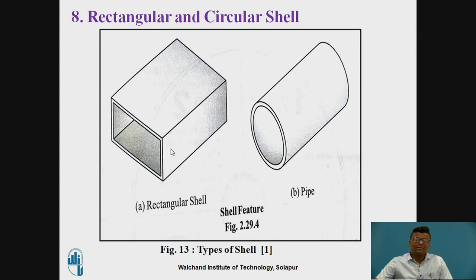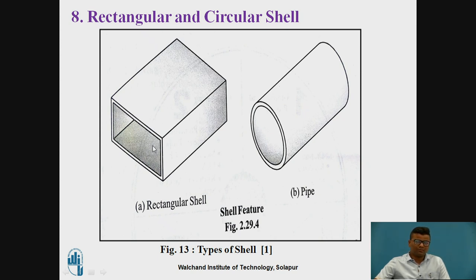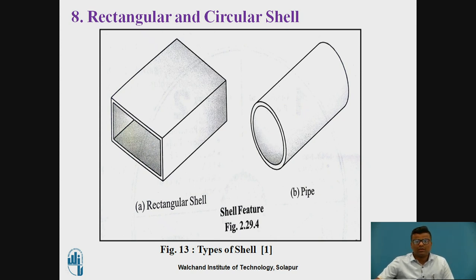Shell. Shell is similar to pocketing, but here we are providing thickness between surfaces. This is the rectangular shell — suppose you have one cube and you want to provide a shell. You select the surface and the supporting surface, and we remove that particular surface providing some thickness, similar to pocketing. Suppose you have a solid cylinder and you want to provide some shelling — you remove some material providing some thickness. This is called a hollow pipe. You can use the circular shell inside CATIA. This is the rectangular shell and this will be the circular shell.